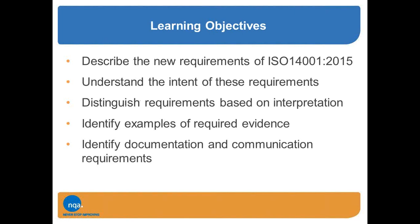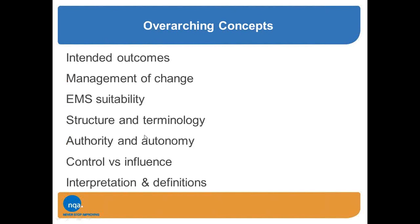The objectives are to be able to describe the new requirements of ISO 14001:2015, based on the FDIS. There may be a slight change when the standard is published, but it cannot be a significant change — only editorial changes are permitted from now. We're going to look at what was intended by the authors, ensure consistent interpretation of requirements, look at evidence we're likely to see, and identify documentation required by the standard and communication issues.